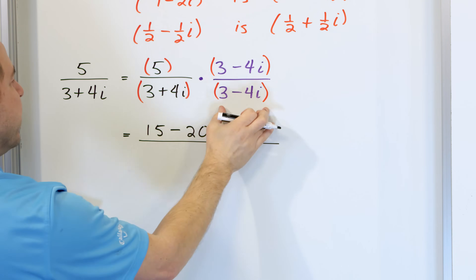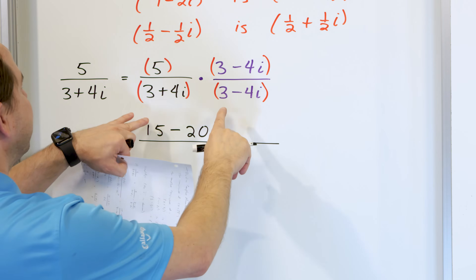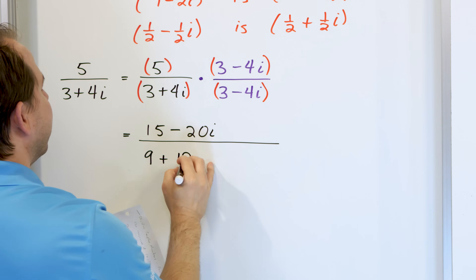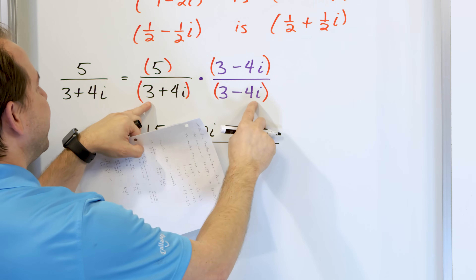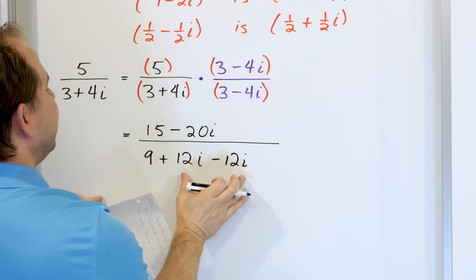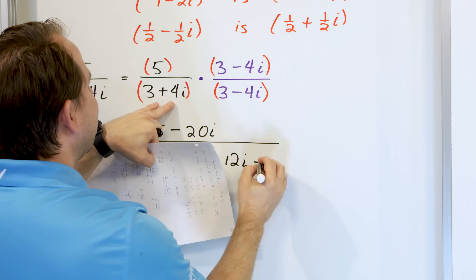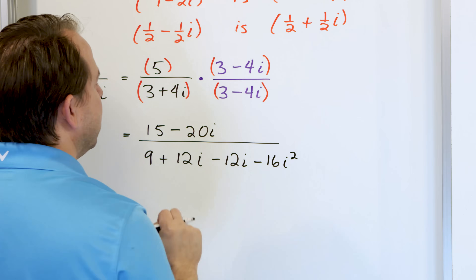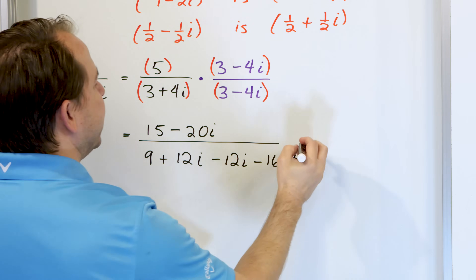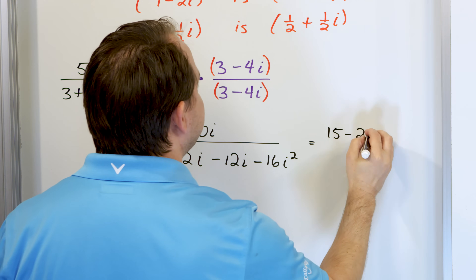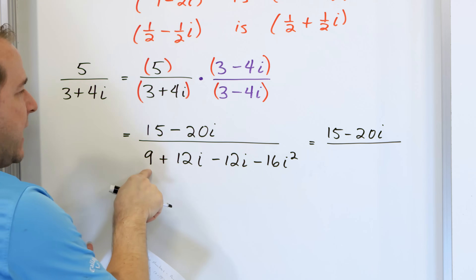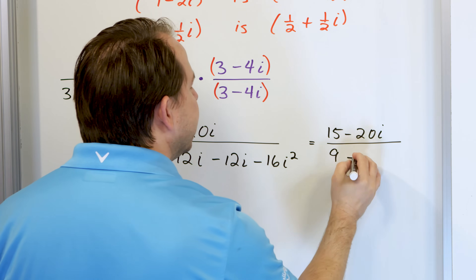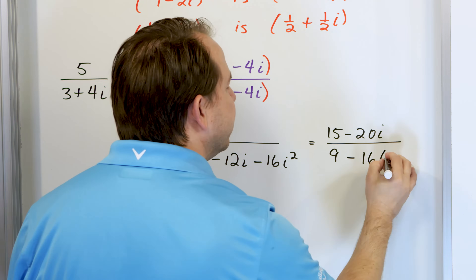For the denominator we have to multiply these complex numbers together using FOIL. Three times three is nine. Inside terms: three times four i is twelve i. Outside terms: three times negative four is negative twelve i — notice the cancellation. Then negative four times four is sixteen and i times i is i squared. Don't forget that is i squared.